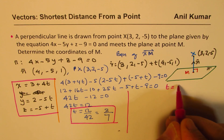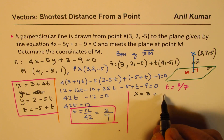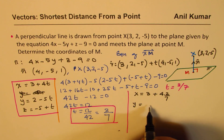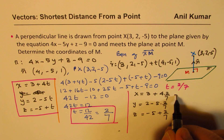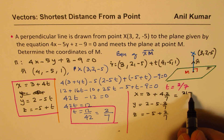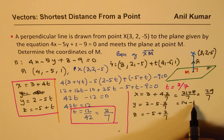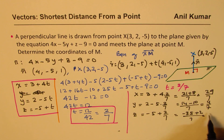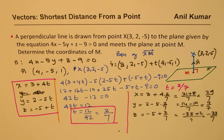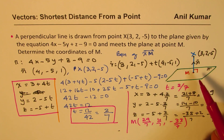With t = 2/7, we find the coordinates of M: x = 3 + 4(2/7) = 21/7 + 8/7 = 29/7; y = 2 - 5(2/7) = 14/7 - 10/7 = 4/7; z = -5 + 2/7 = -35/7 + 2/7 = -33/7. So the coordinates of point M are (29/7, 4/7, -33/7).